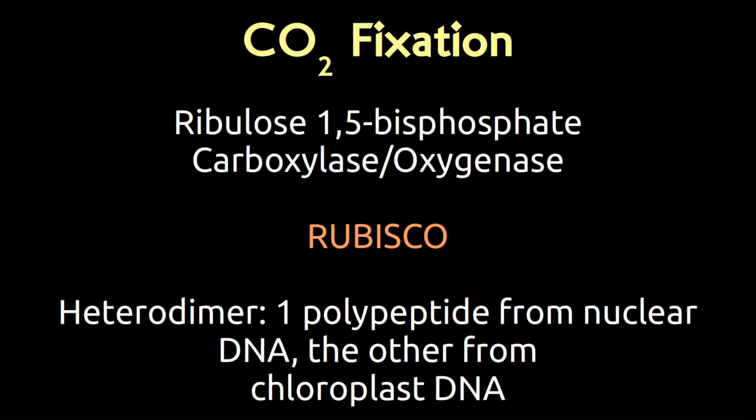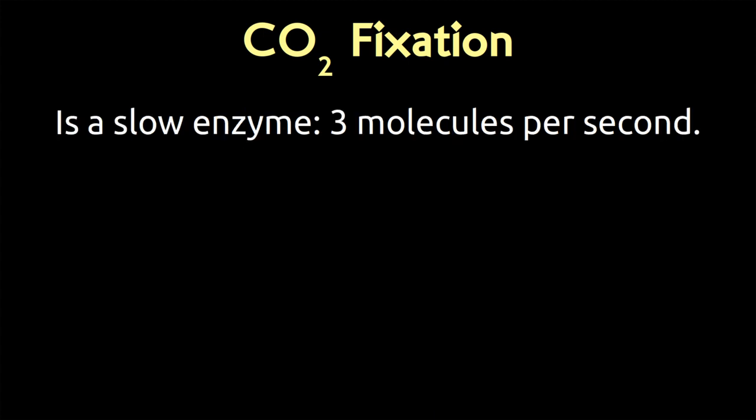Rubisco is a heterodimer — we have two polypeptides. One polypeptide comes from the nuclear DNA, one from the chloroplast DNA. Rubisco is an interesting enzyme. Kind of like me, it is a slow enzyme. It's only going to react three molecules per second — only do its reactions thrice per second. That's not very much for an enzyme. This is slow.